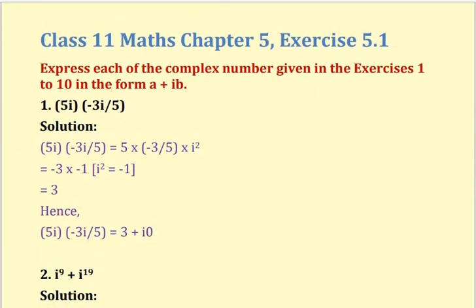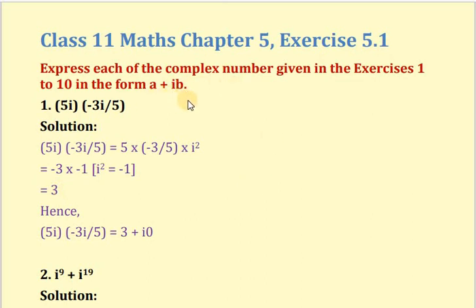Now let us see some examples from exercise 5.1. We have to express complex numbers in a plus bi form. The first example is 5i multiplied by minus 3i upon 5. We cancel the 5 in numerator and denominator and get minus 3i squared. Since i squared equals minus 1, we get minus 3 into minus 1, which is positive 3. In a plus bi form, the answer is 3 plus 0i.